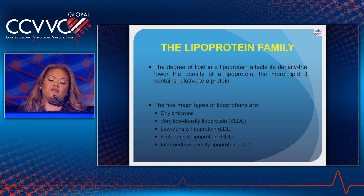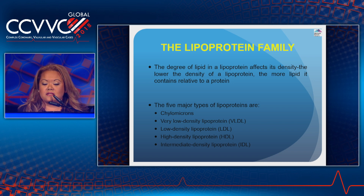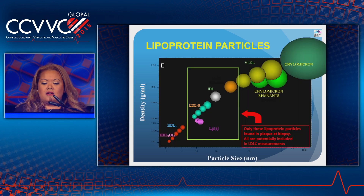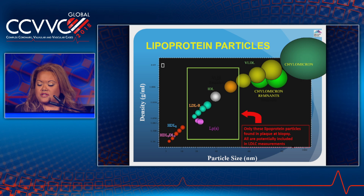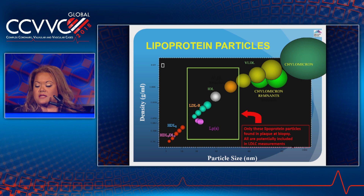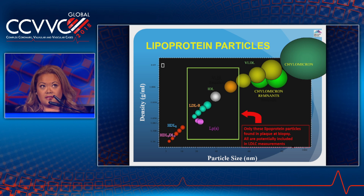The degree of lipid in a lipoprotein affects its density. The lower the density of a lipoprotein, the more lipid it contains relative to the protein. The five major types of lipoproteins are chylomicrons, VLDLs, LDLs, HDLs, and IDLs. By reporting single values for a lipoprotein cholesterol level, the traditional lipid panel implies that lipoproteins such as HDL and LDL are single entities. This slide illustrates that all lipid subfractions are present within a continuum of size and density, with an especially large gradient for the triglyceride-rich lipoproteins IDL, VLDL, and chylomicrons.